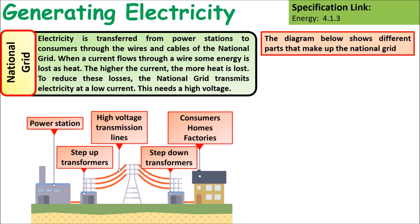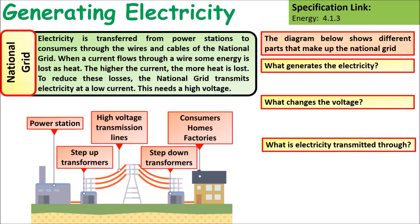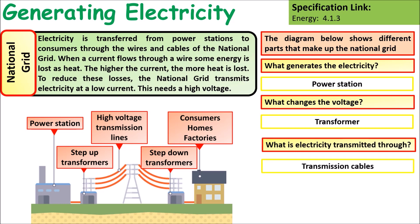Looking at the diagram showing different parts of the national grid: the power station generates the electricity, the transformers change the voltage, and the electricity is transmitted through transmission or electrical cables.